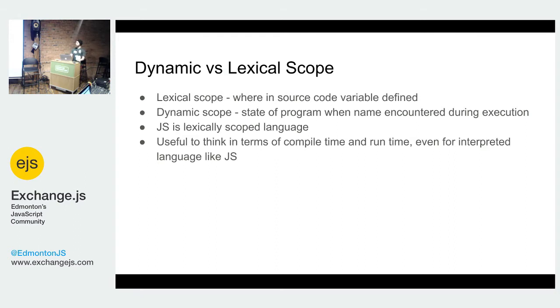To understand scope in JavaScript, I find it useful to think of a compile time and a runtime, even though as an interpreted language, JavaScript doesn't have discrete compile time or runtimes in the same way that C++ or Java do.